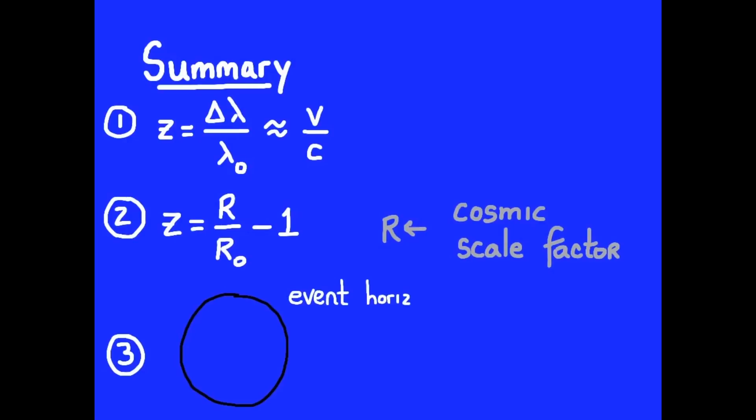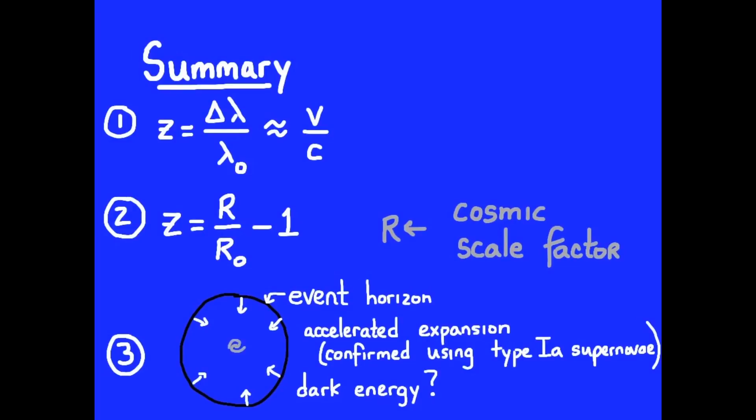We introduced the term cosmic event horizon, and we talked about how we have evidence using type 1a supernovae that the expansion of the universe is accelerating. And we talked about the term dark energy, the stuff feeding this expansion. We can't see it, and we're not sure what it is. Accelerated expansion also means that the event horizon is going to get smaller, and we're going to be able to see less and less of that bigger and bigger universe.